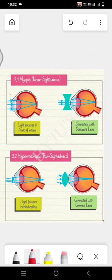Next is hypermetropia, which means farsightedness. In hypermetropia, the light rays focus behind the retina. Therefore, the image is not clear. To treat this defect, we use convex lens.